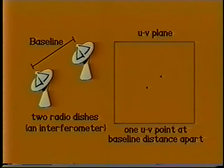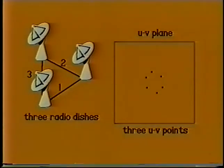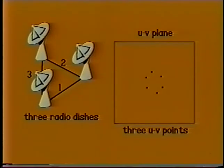Two dishes operating as an interferometer measure a point in the UV plane away from the center. The resolution is the same as a single dish with a diameter equal to the length of the baseline. Each baseline gives one point in the UV plane. Three dishes give three baselines and three UV points. To get better UV coverage, we can use an array of antennas.